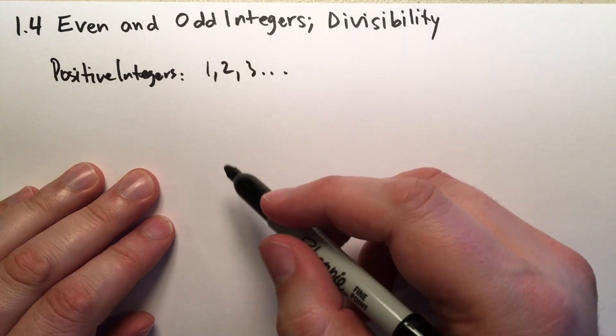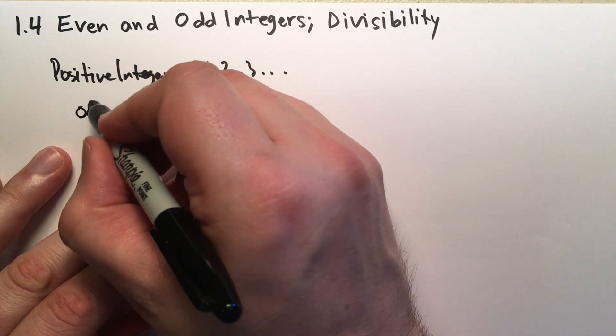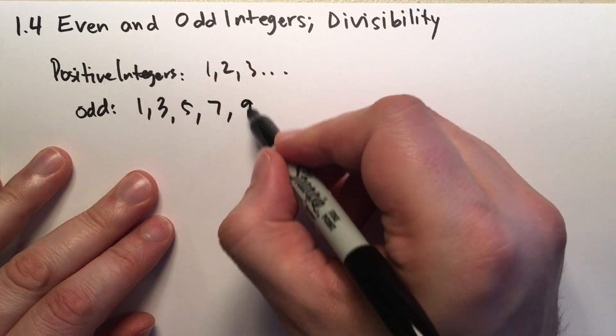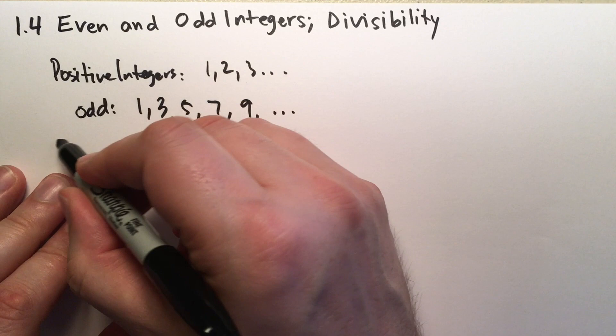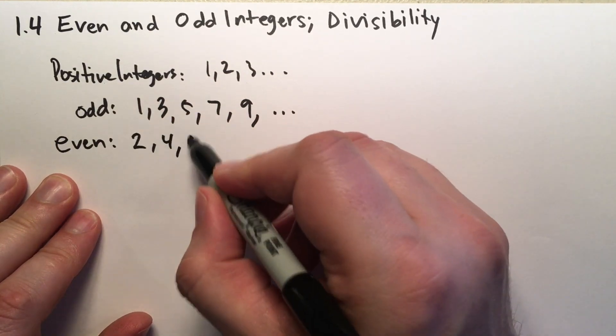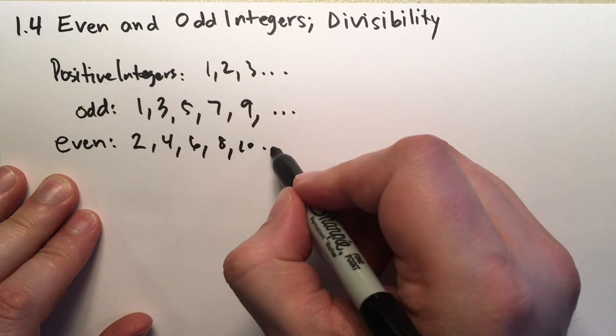Some of them we'll call odd, this will be 1, 3, 5, 7, 9, and so on, and some we'll call even. This is 2, 4, 6, 8, 10, etc.